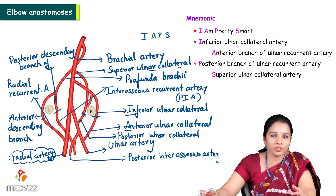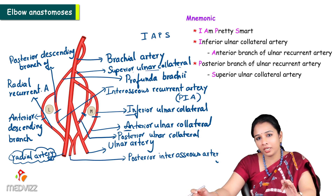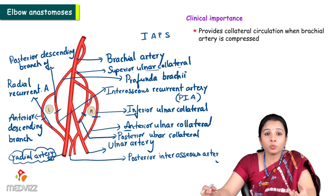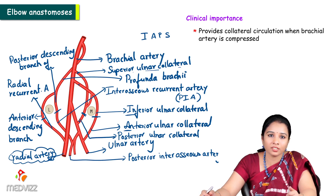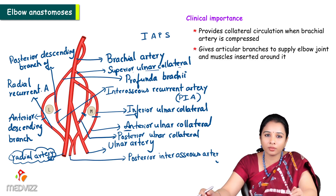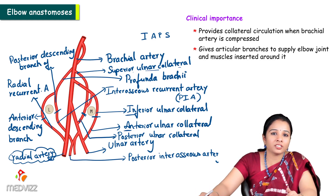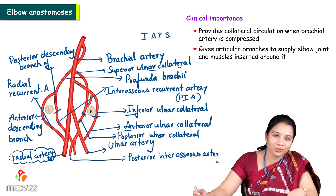To summarize: in front of the lateral epicondyle, behind the lateral epicondyle, in front of the medial epicondyle, and behind the medial epicondyle. This elbow anastomosis provides collateral circulation when the brachial artery is compressed — that is the main clinical use. It also gives articular branches to supply the elbow joint and muscles that insert or originate near the elbow joint. This completes the anastomosis around the elbow joint.